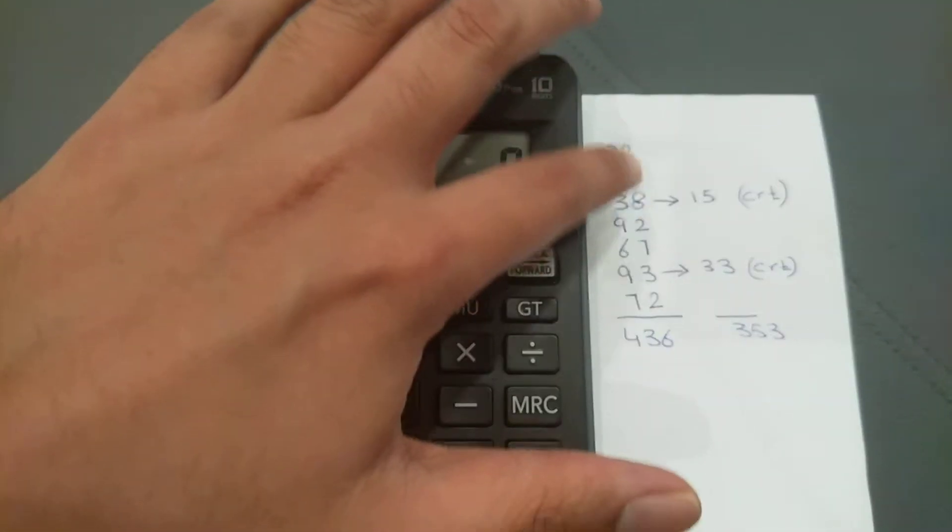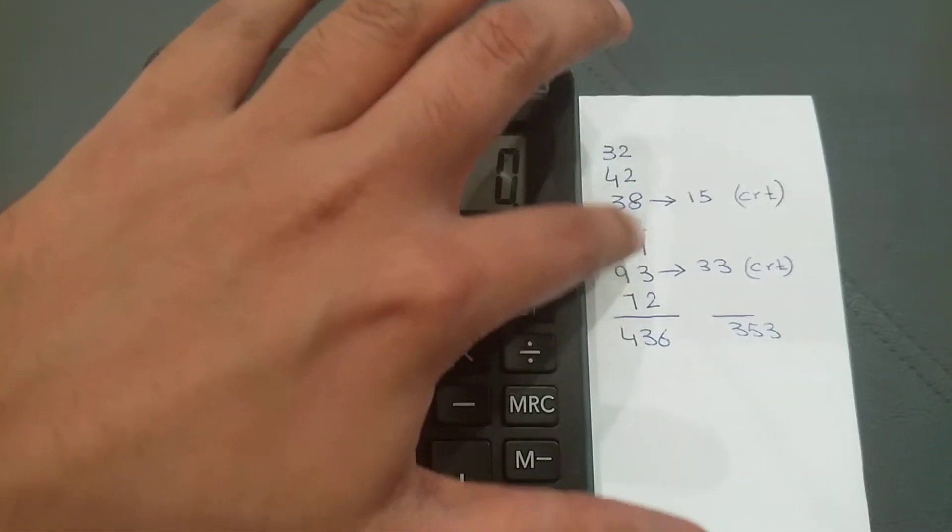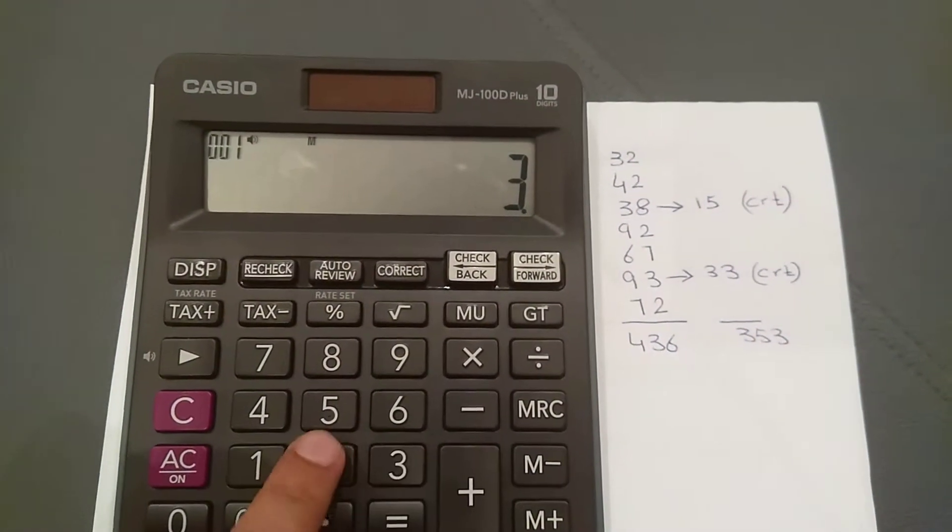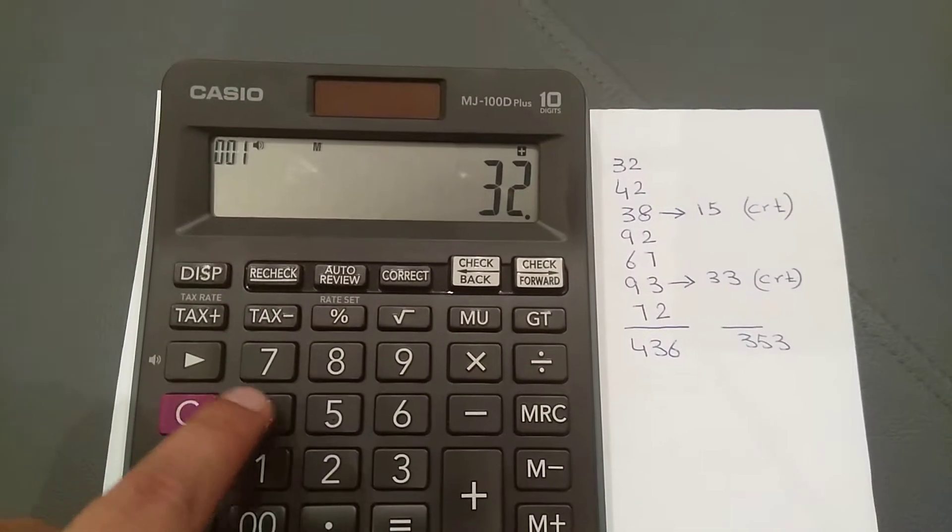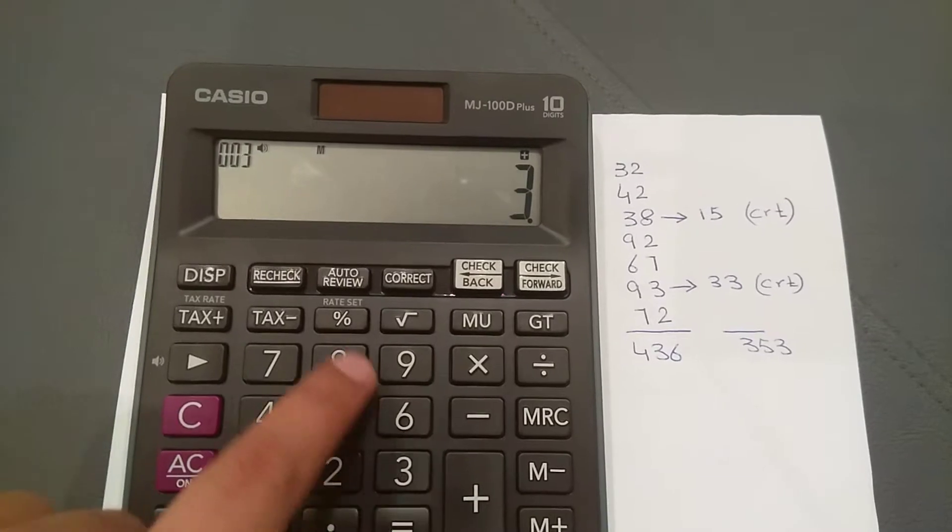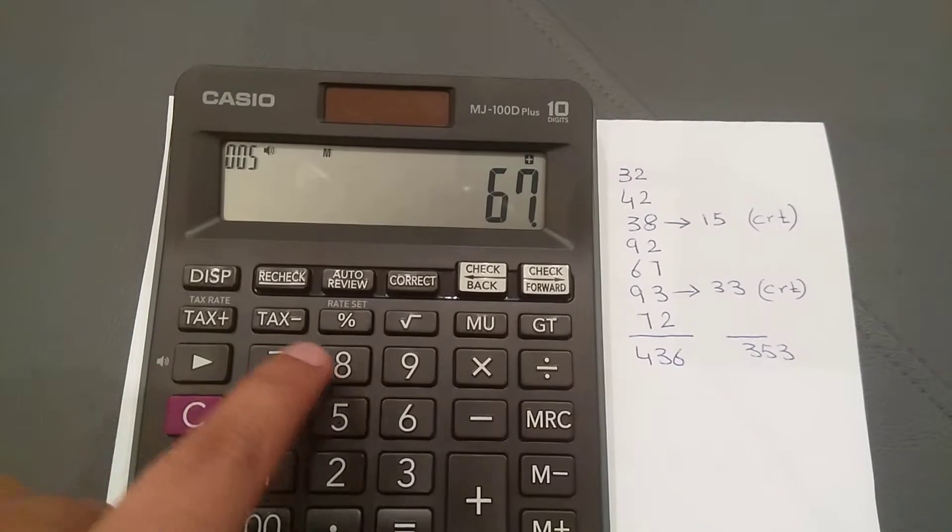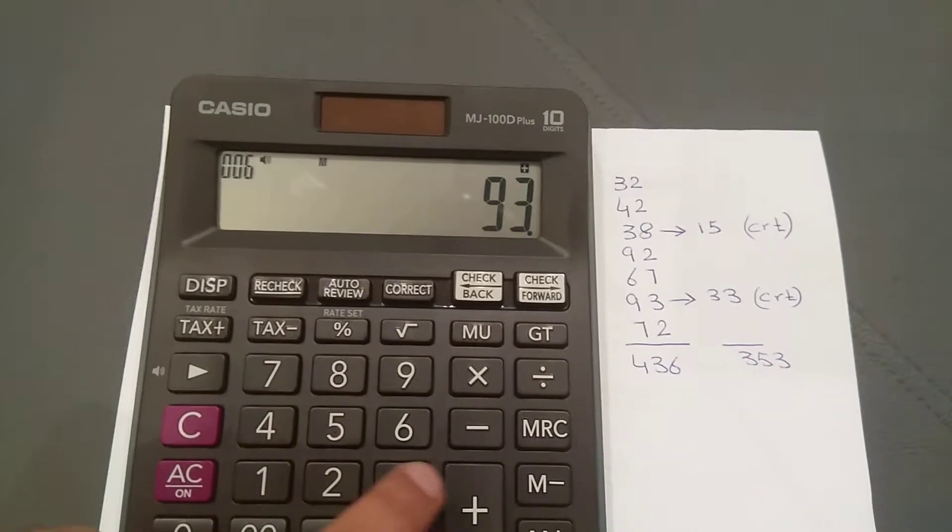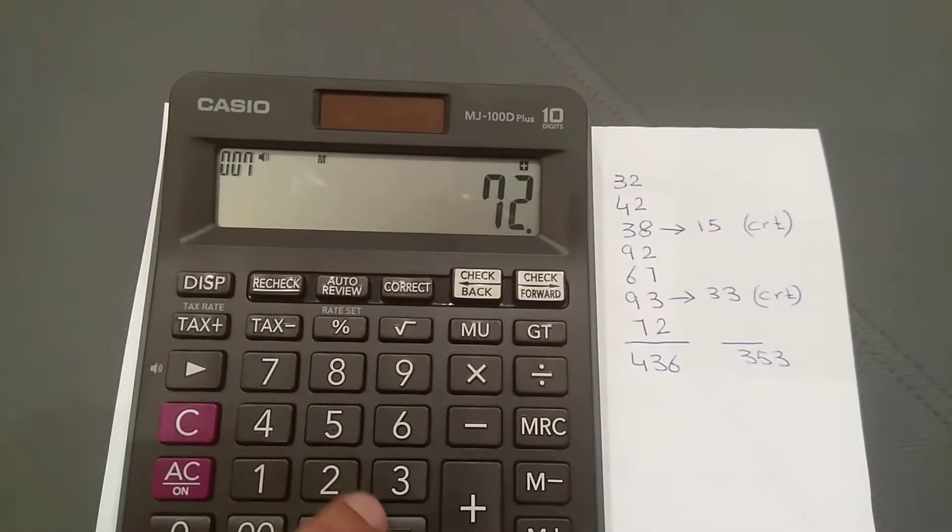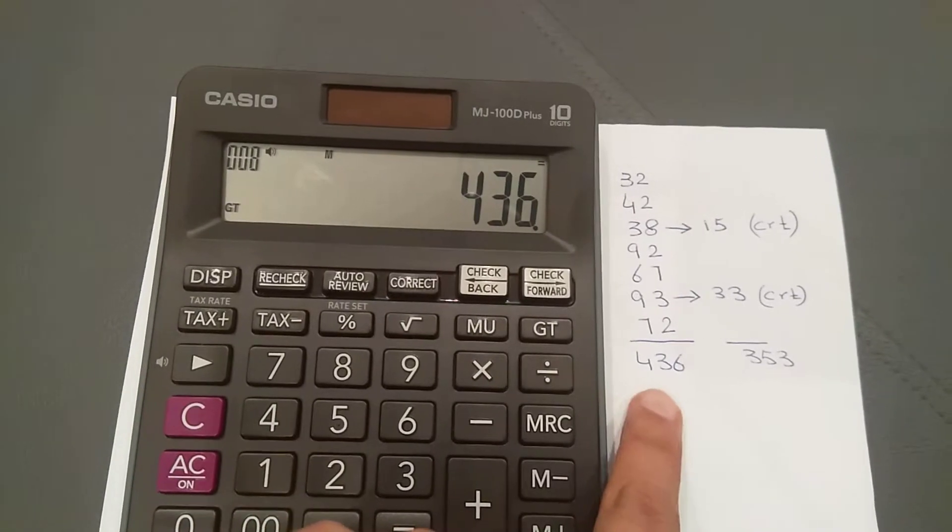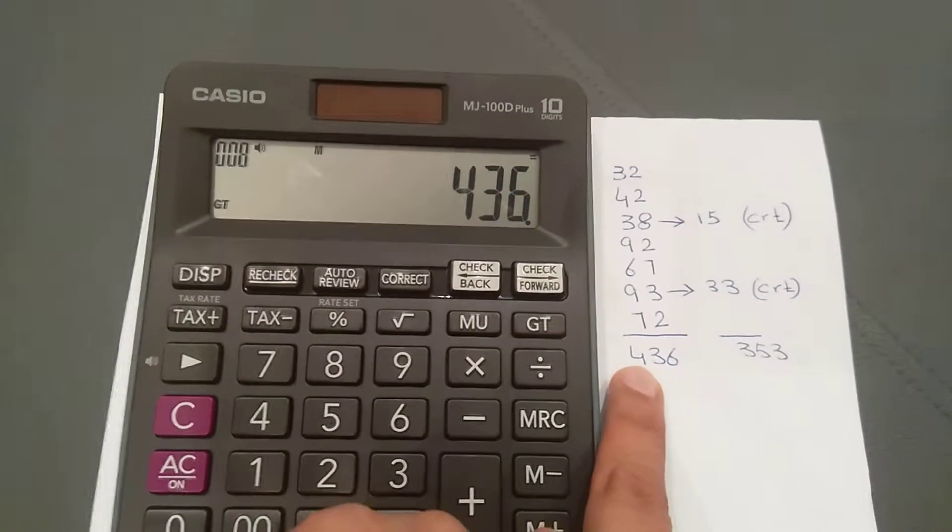Here are some example numbers I will add: 32 plus 42 plus 38 plus 92 plus 67 plus 93 plus 72 equals 436. Now I change my mind and want to correct certain numbers.